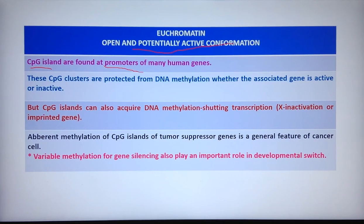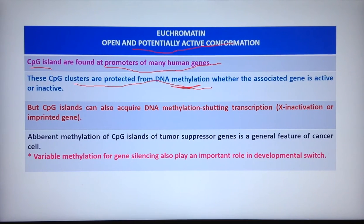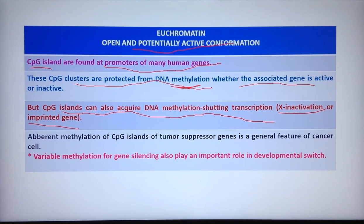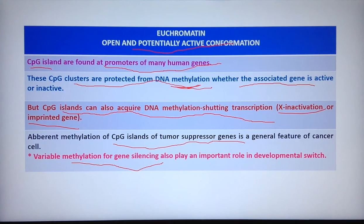Euchromatin is an open and potentially active conformation. CpG islands are found at the promoters of many human genes and are protected from DNA methylation to allow transcriptional activity, so these CpG clusters remain demethylated whether the associated gene is active or inactive. However, CpG islands can also acquire DNA methylation, shutting down transcription during inactivation or for imprinted genes. Aberrant methylation of CpG islands of tumor suppressor genes is a general feature of cancer cells. Variable methylation for gene silencing plays an important role in developmental switching.